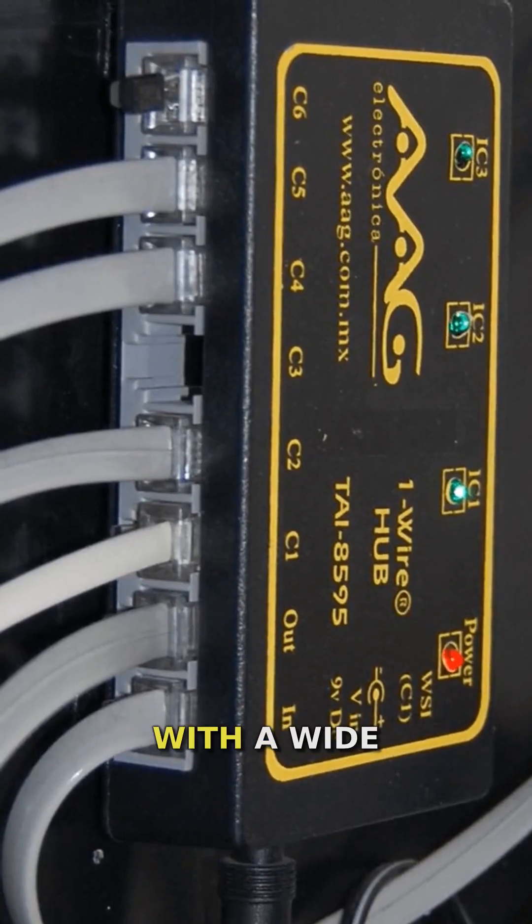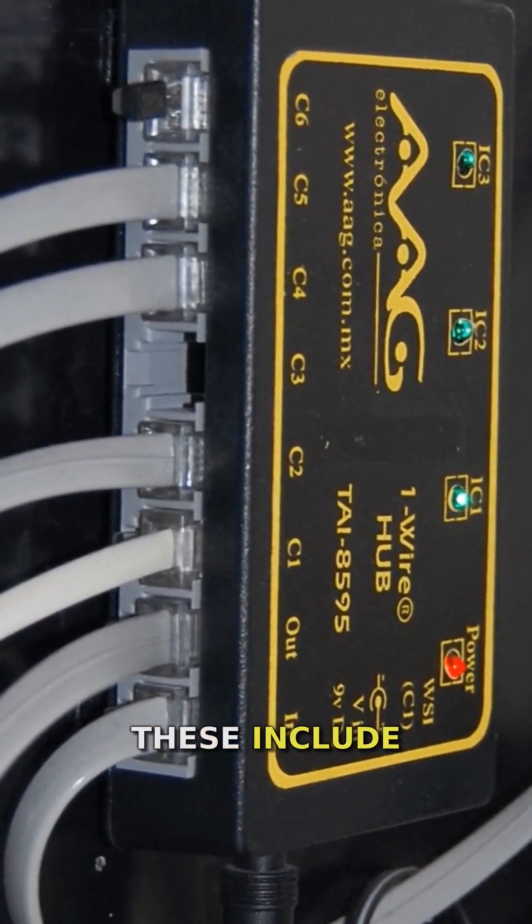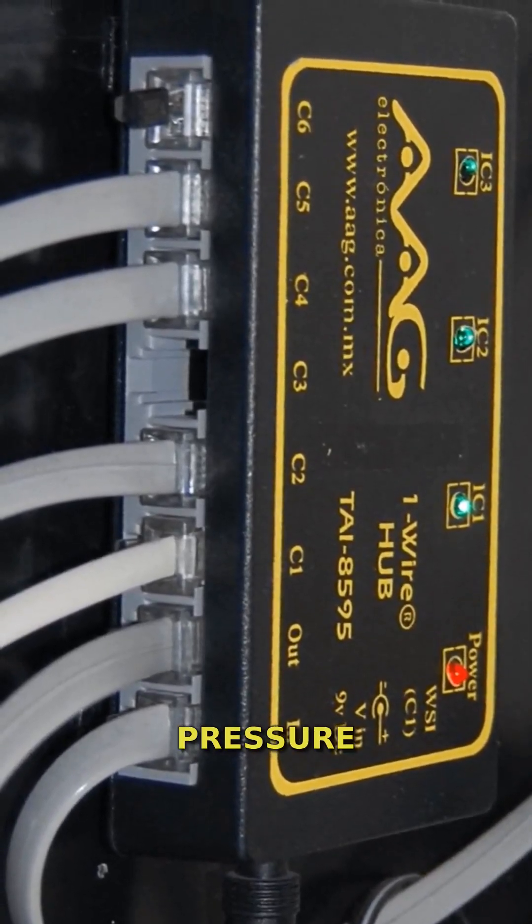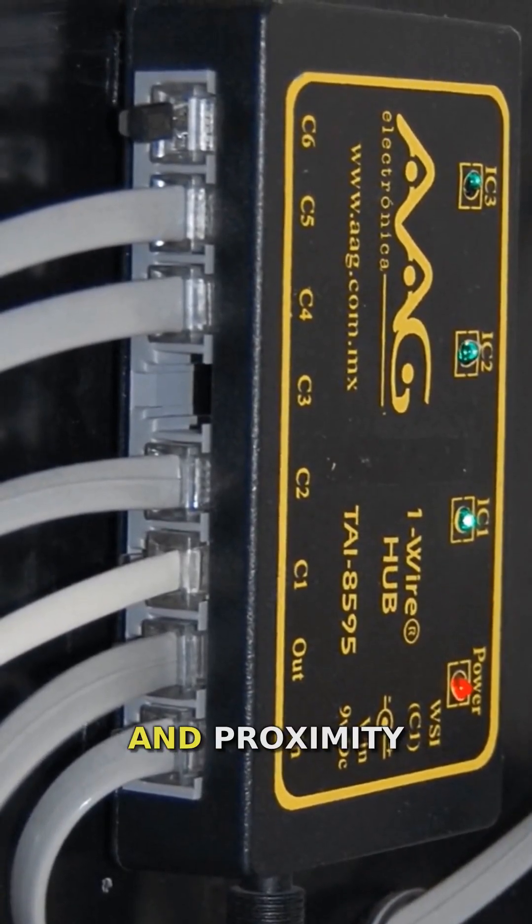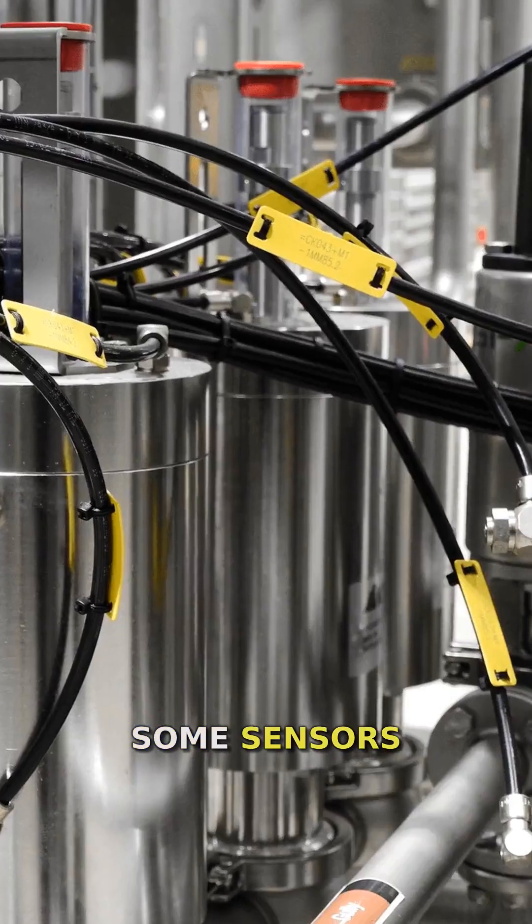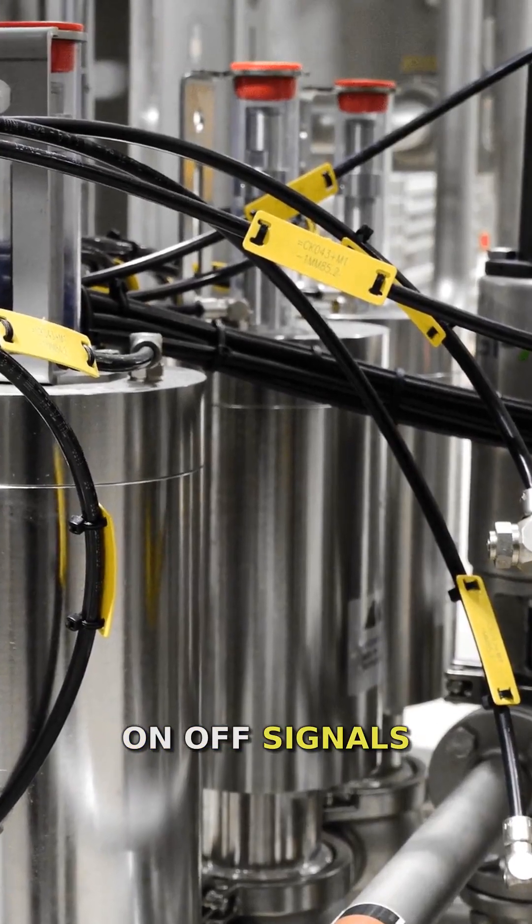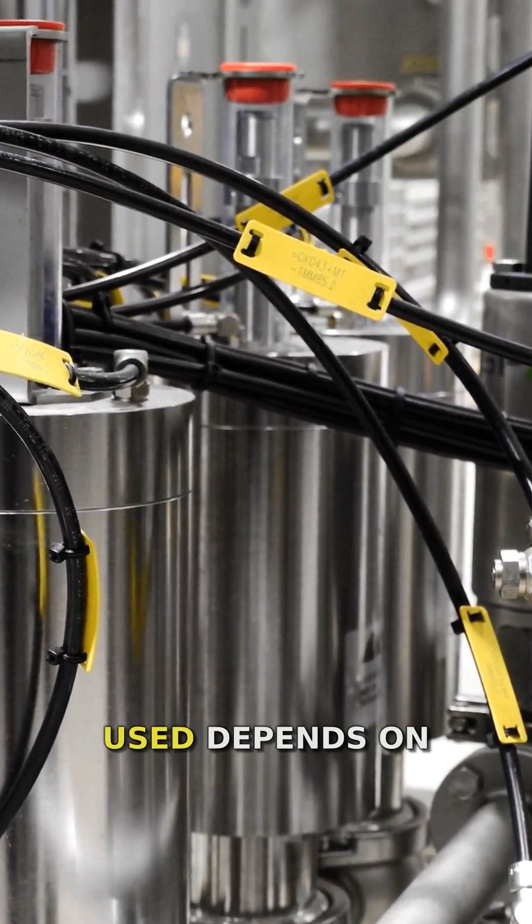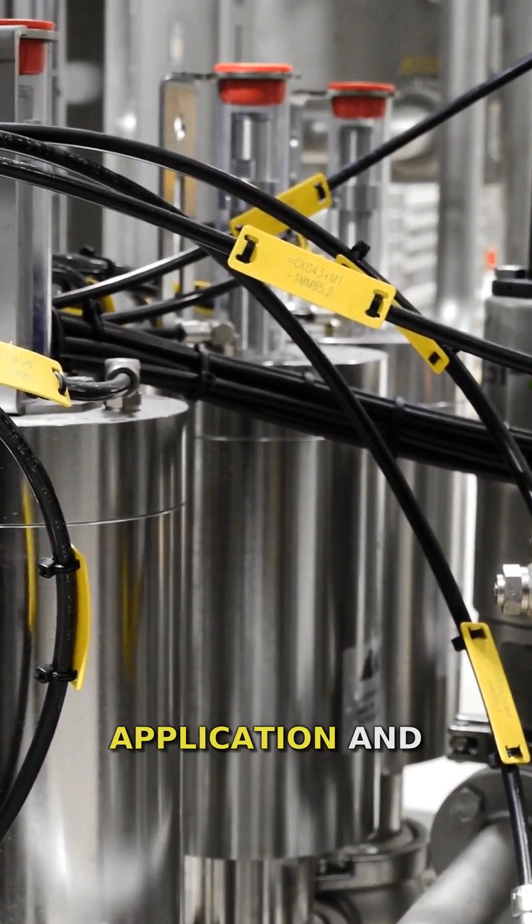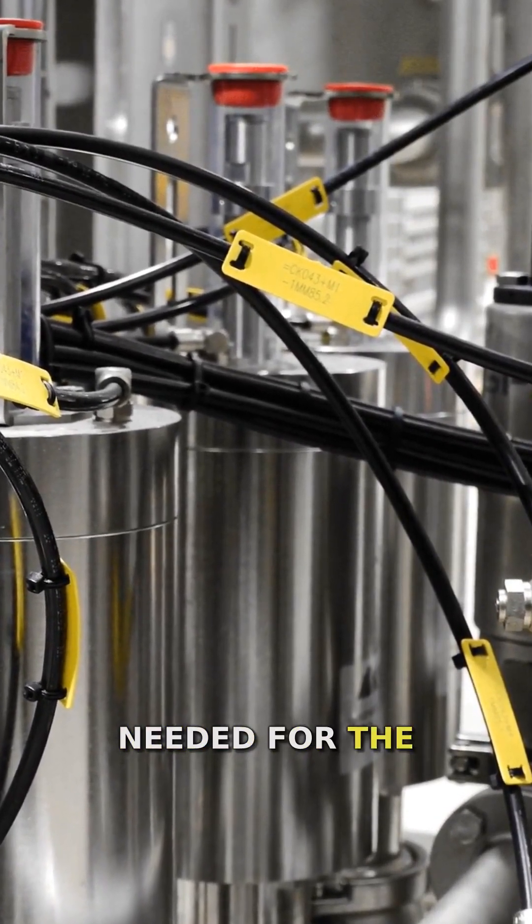PLCs can work with a wide variety of sensors. These include temperature sensors, pressure sensors, flow meters, level sensors, and proximity sensors. Some sensors provide simple on-off signals, while others offer more complex analog readings. The type of sensor used depends on the specific application and the kind of data needed for the control process.